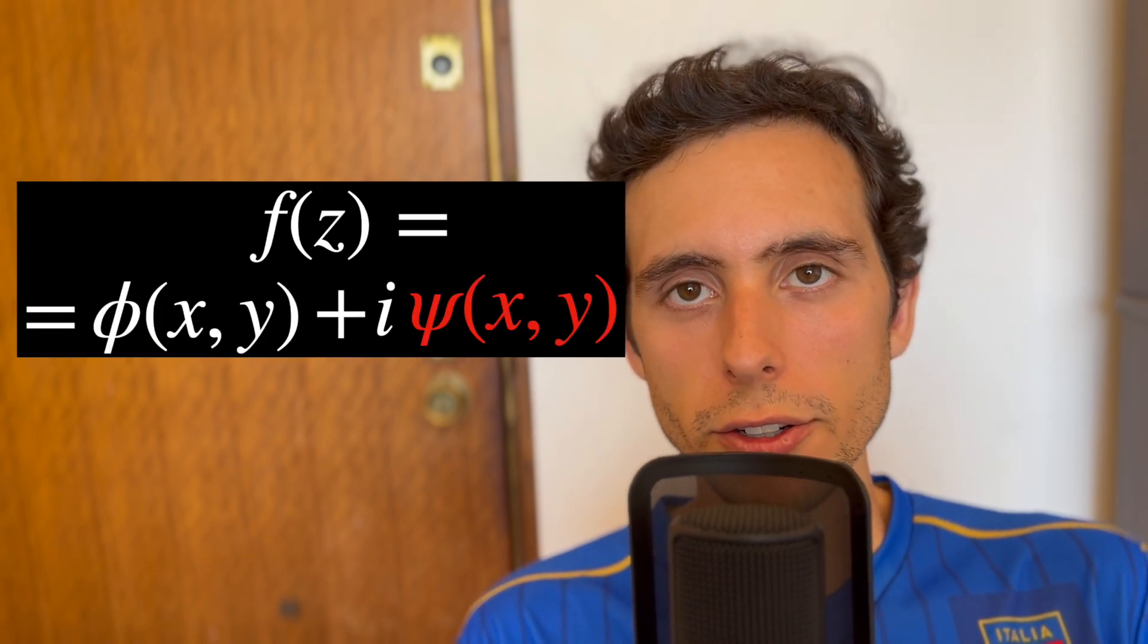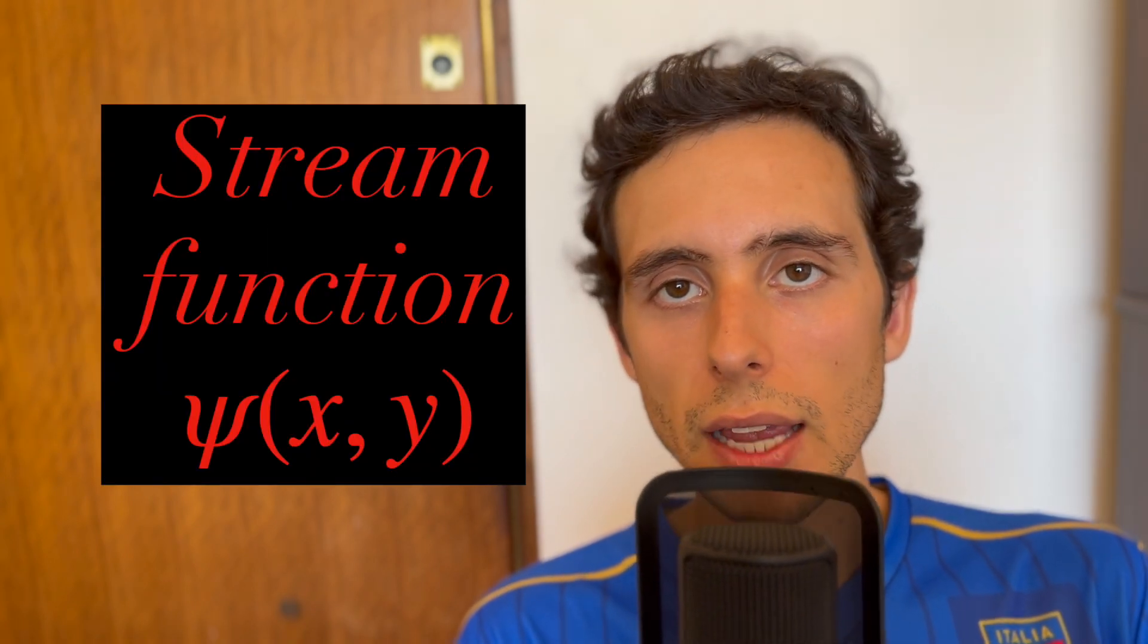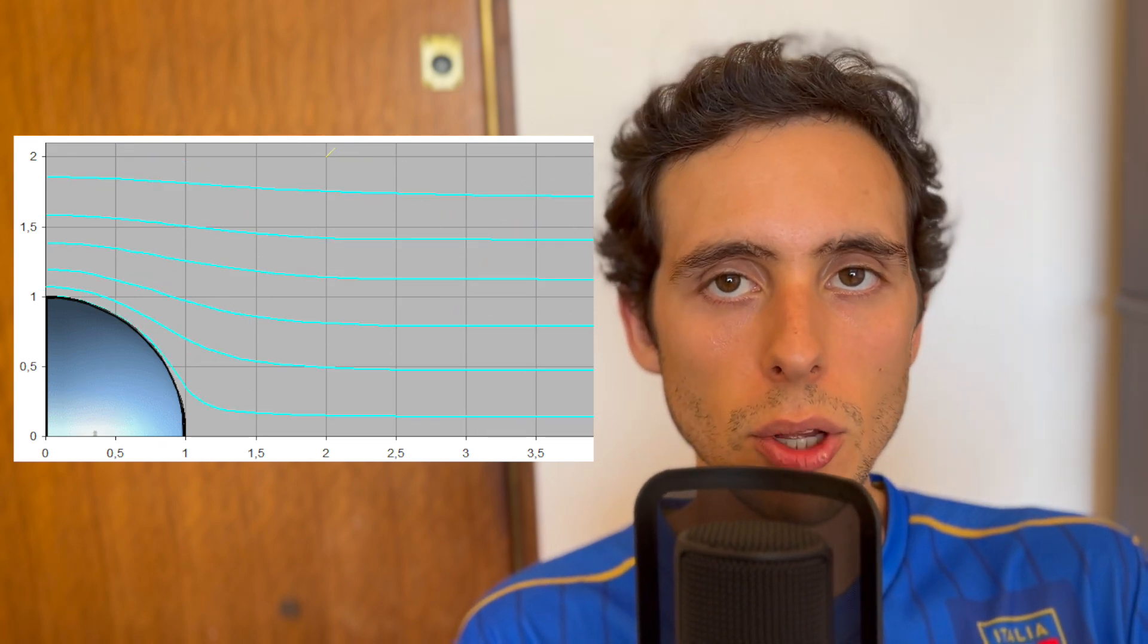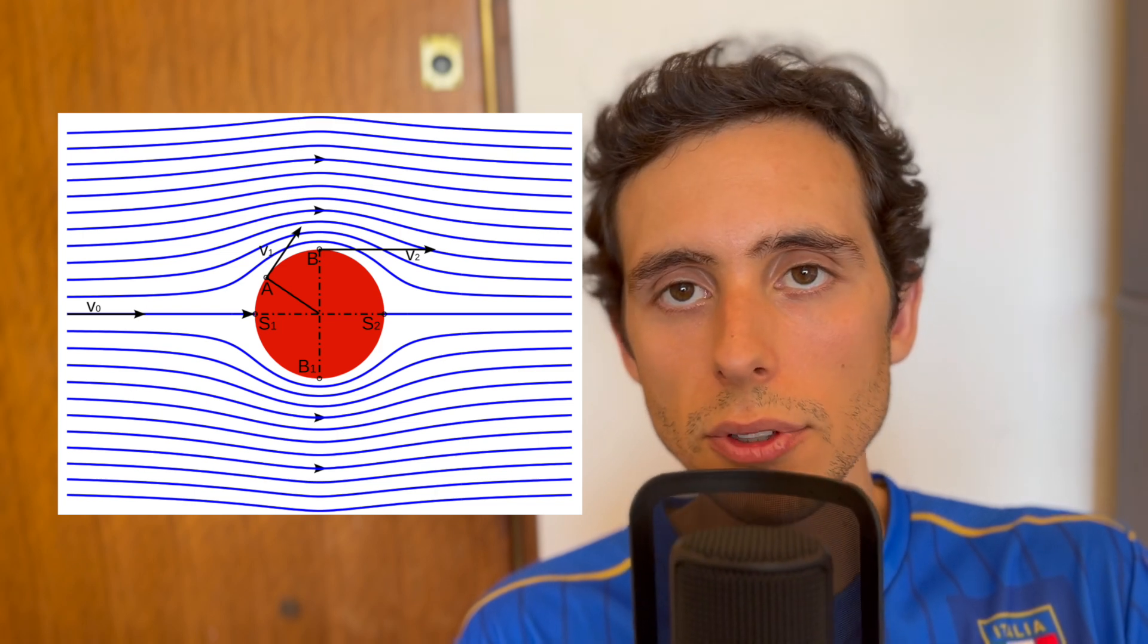Let's see now the imaginary part, psi of xy, known as the stream function. This is a scalar function whose contours represent streamlines of the flow. So basically, these are curves that are tangent to the velocity field at every point on the complex plane.